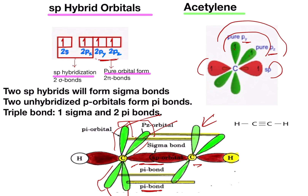Thus a triple bond is formed, including one sigma sp-sp bond and two pi pp bonds. Each carbon also forms a sigma sp-s bond with the hydrogen atom. Finally, acetylene is a linear molecule with a bond angle of 180 degrees.